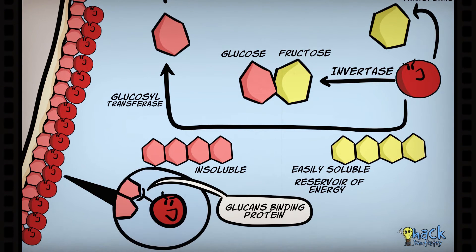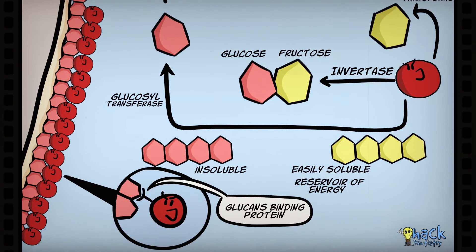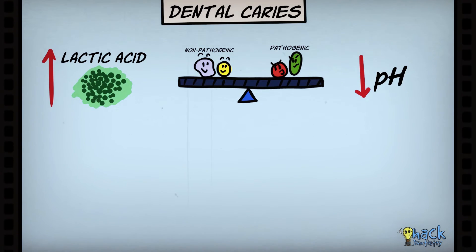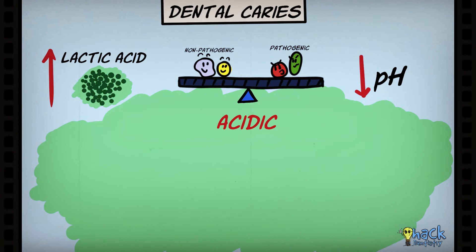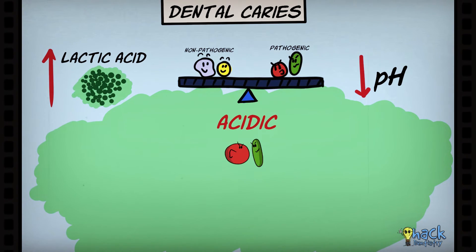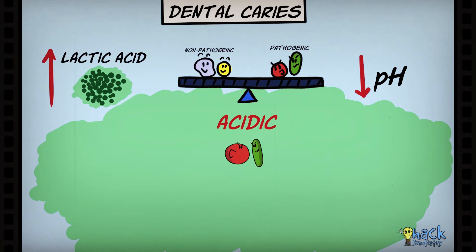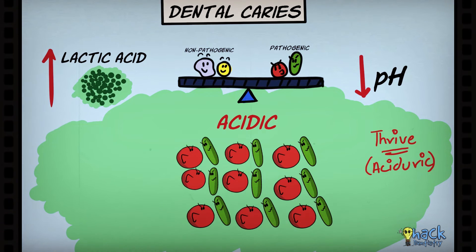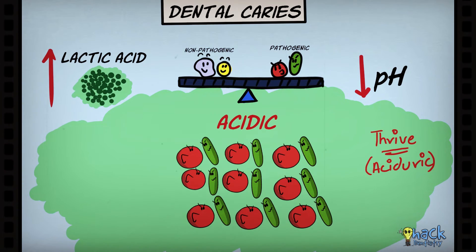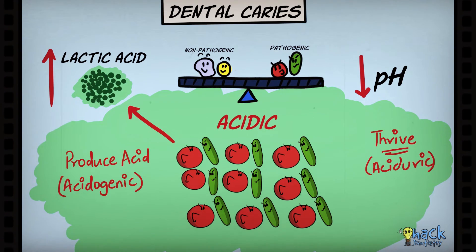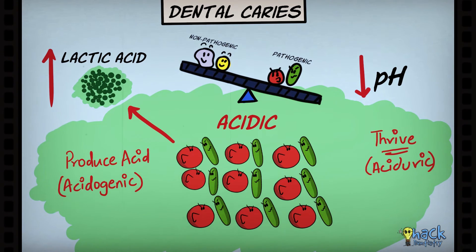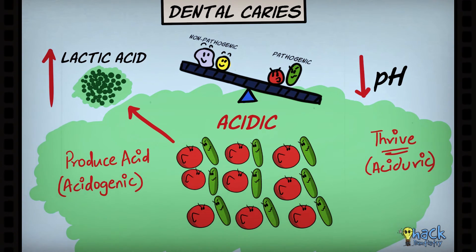Mutans contains glucan-binding proteins which help in its adhesion. This increase in lactic acid decreases the pH of the local environment, making it very acidic. Caries-causing bacteria like Streptococcus mutans and Lactobacilli species can thrive and proliferate in such acidic environments and start to increase in population. Besides thriving, they also produce more acid, and this ecological shift to an acidic environment increases the cariogenic bacterial population and decreases the non-cariogenic bacterial population, altering the balance or homeostasis of the bacterial community.